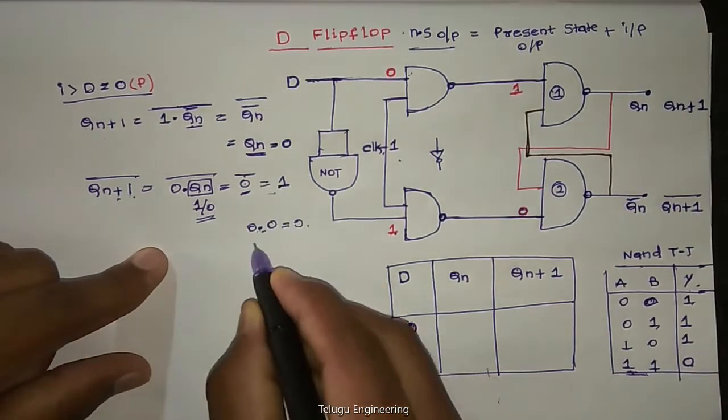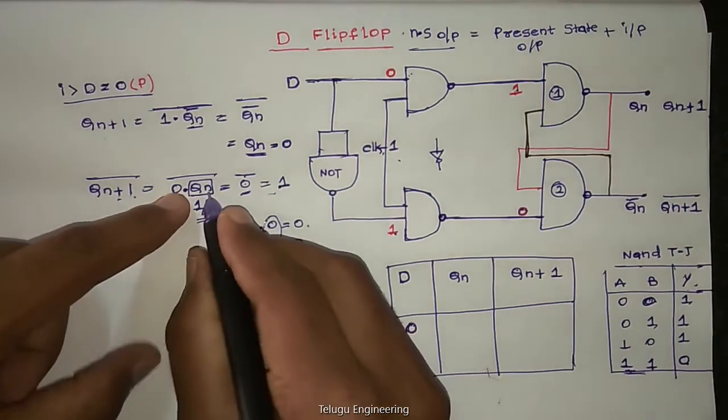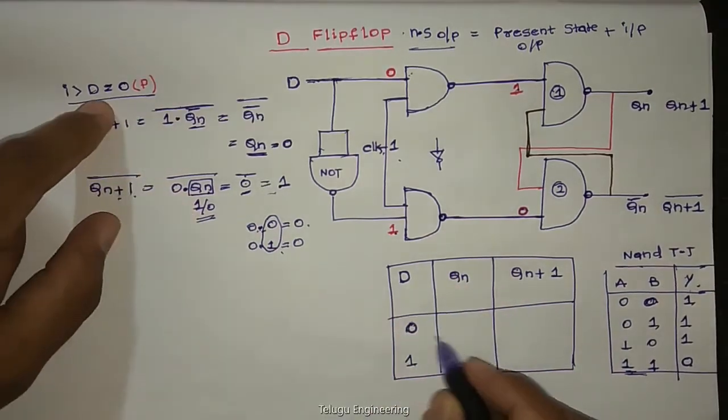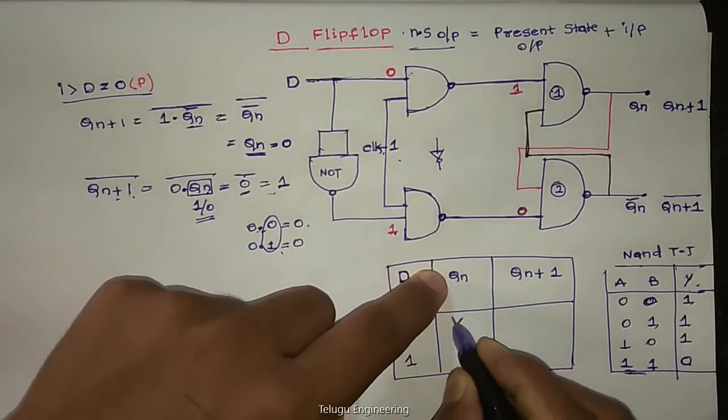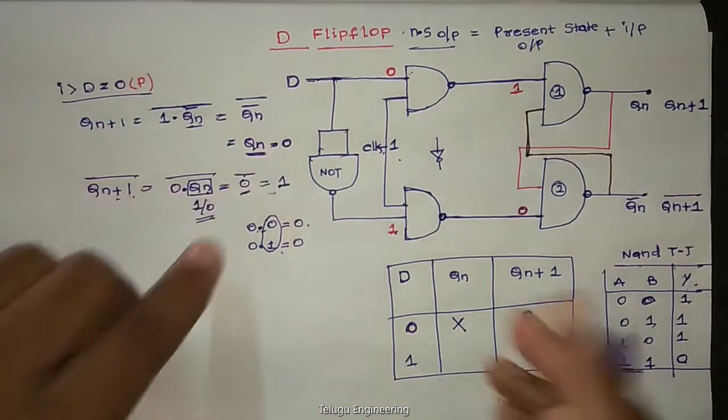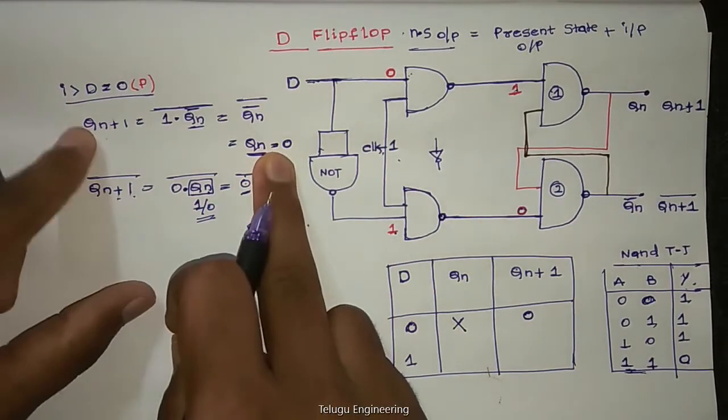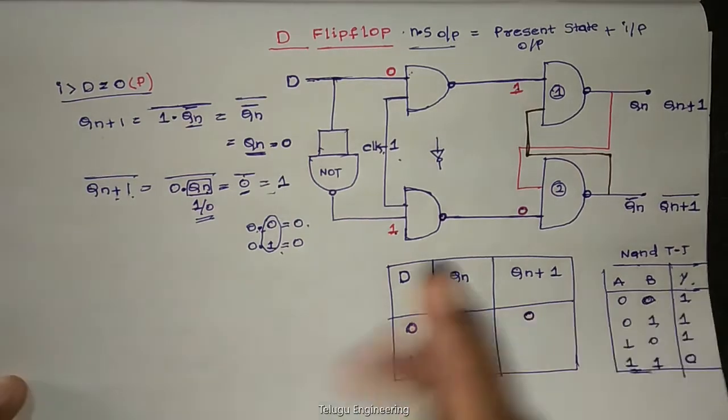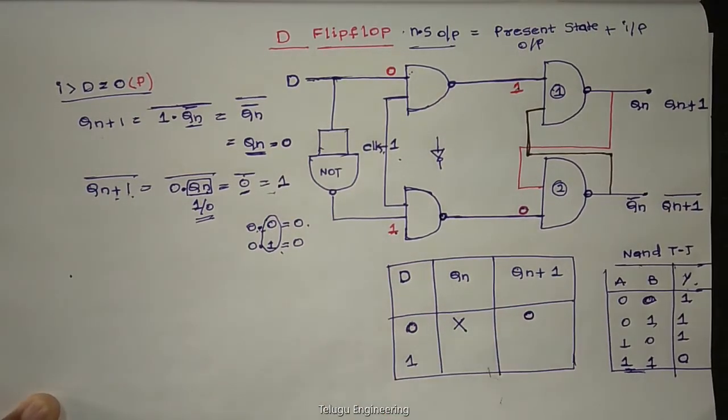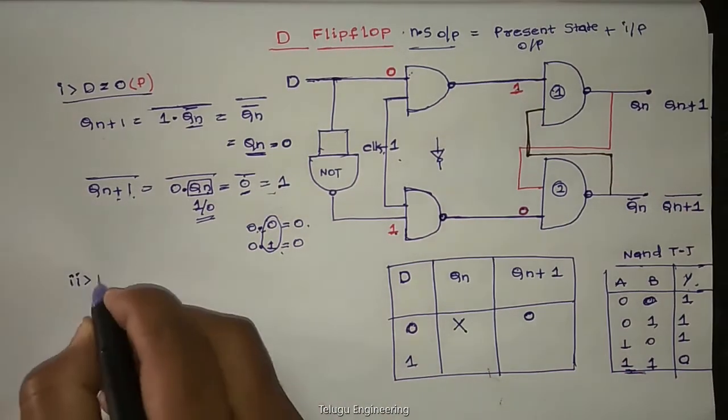Whether Qn is 1 or 0, we don't care. Zero into zero is zero. Zero and one is zero. So Qn, whatever value, we don't care. Whenever D is zero, we don't care what the value of Qn, output Qn+1 is zero. Because complement, Qn+1 is zero.